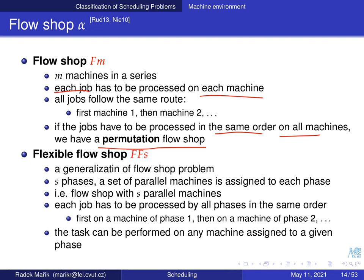A flexible flow shop, labeled FFS, is a generalization of the flow shop. There are s phases, and each phase contains a set of parallel machines. For example, phases 1, 2, and 3 might have 2, 1, and 3 machines respectively. Each job must be processed in all phases, but it can be performed on any machine assigned to a given phase.